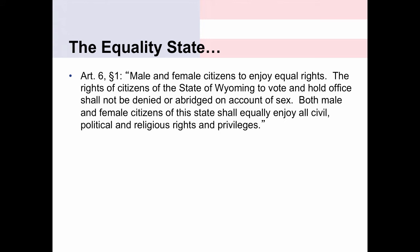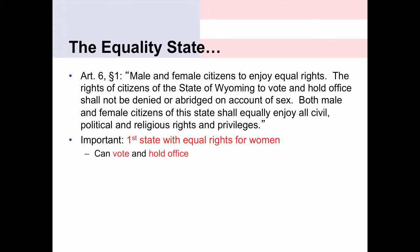Article 6, Section 1 states that male and female citizens shall enjoy equal rights: 'The rights of citizens of the state of Wyoming to vote and hold office shall not be denied or abridged on account of sex. Both male and female citizens shall equally enjoy all civil, political, and religious rights and privileges.' This marks Wyoming as very unique — we were the first state to provide equal rights for women as an individual right, meaning women could vote and hold office, something they could not do in most other states at the time.